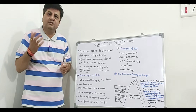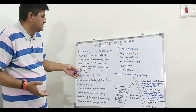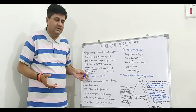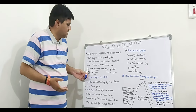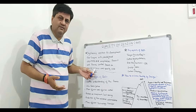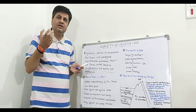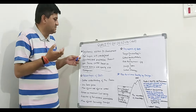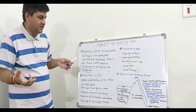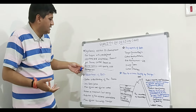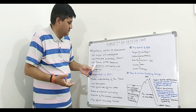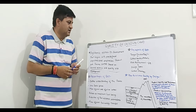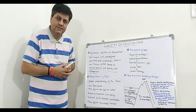We are controlling the process and product on the basis of sound science and quality risk management. Whatever we implement under Quality by Design, there should be science behind it. Another important thing is quality risk — we have to manage this quality risk, and risk assessment should be there.